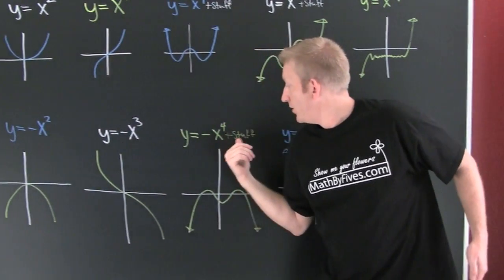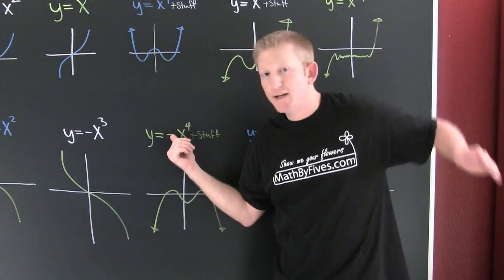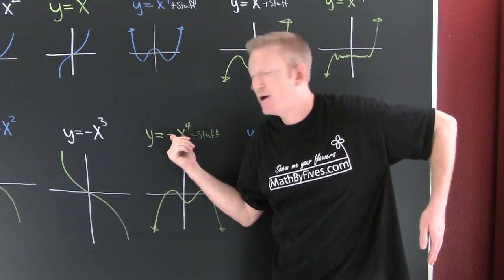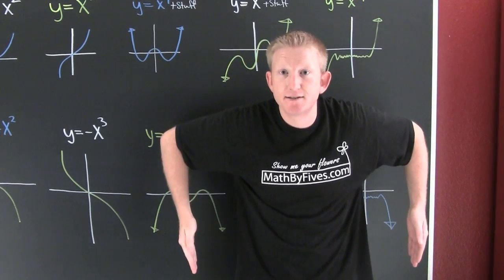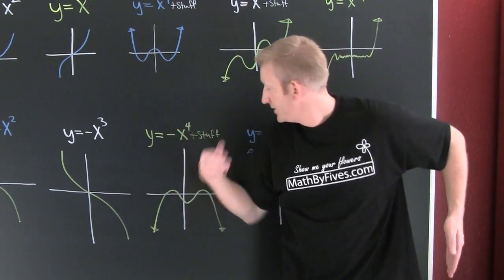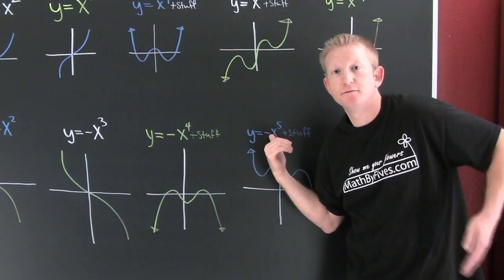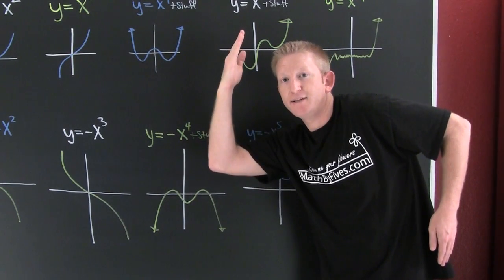Y to the fourth plus stuff. The negative sign in front says it's going to end down. It's going to end down and they're going to be the same, so it's like this. The next one, y to the fifth. That says they're going to mix and it's going to end down, like this.